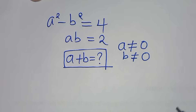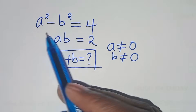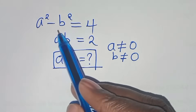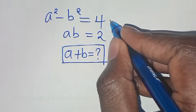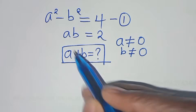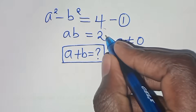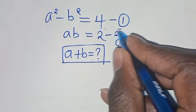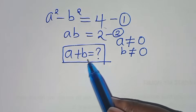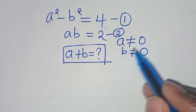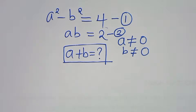Hello everyone, you are welcome to solve this nice algebra problem. We have a squared minus b squared equals 4 — let's call this equation 1. Then a times b equals 2 — let's call this equation 2. What is the value of a plus b, given that a is not equal to 0 and b is not equal to 0?